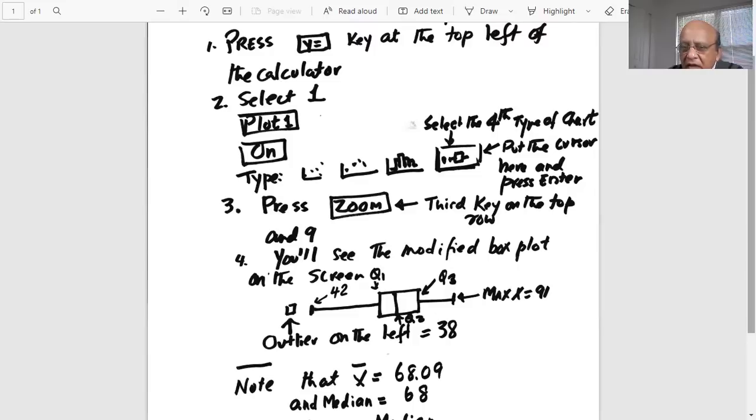Whereas on the right, the right whisker from Q3 extends up to the maximum, which is 91, and that is because 91 is not an outlier.